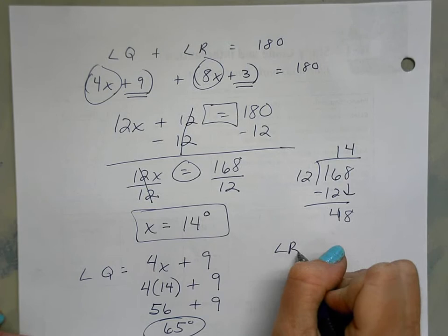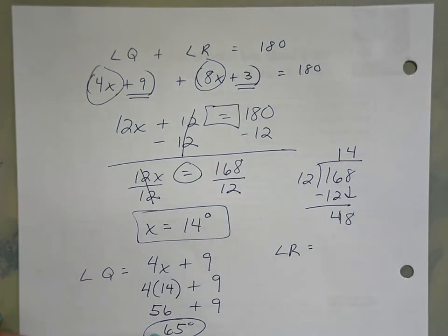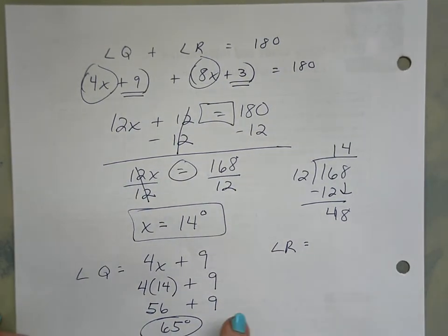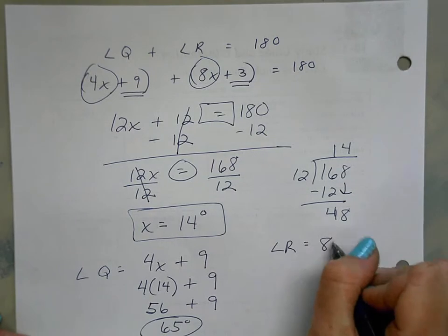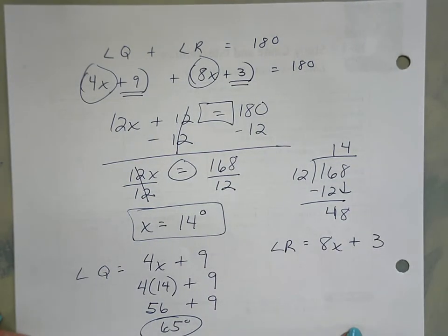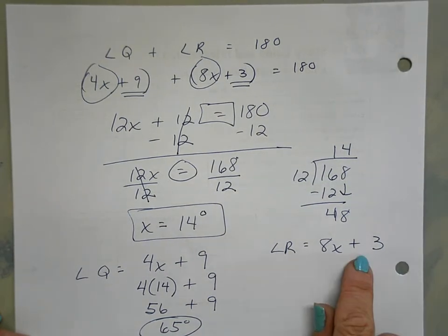Angle R - sometimes students here will just subtract from 180. The problem there is if this answer is wrong, your other answer is also going to be wrong. So I always say do the substitution and then check your answer by seeing if your two numbers actually will have a sum of 180. So angle R was 8x plus 3.